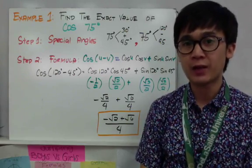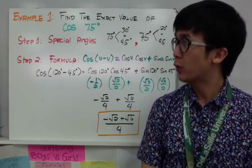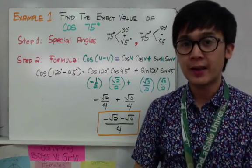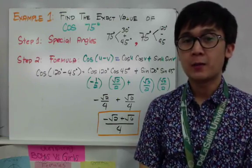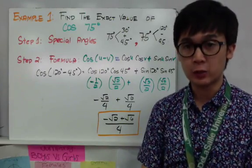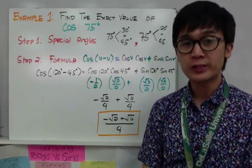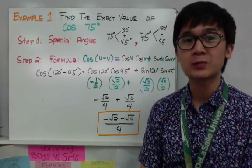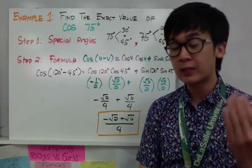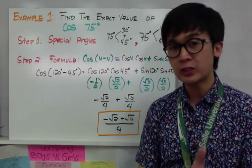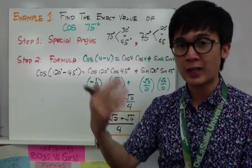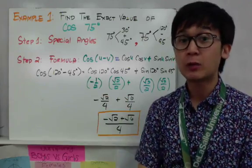To find cosine 75 degrees without using the calculator, we use the sum and difference formula. Step one is to find a combination of special angles that equal 75 degrees. These must be special angles included in the unit circle — you can't arbitrarily choose two numbers that add up or subtract to 75.